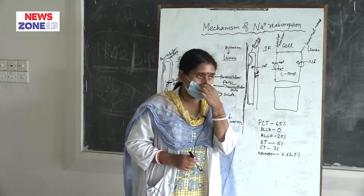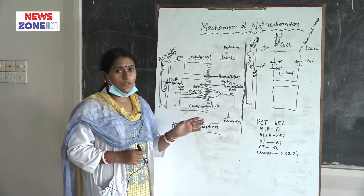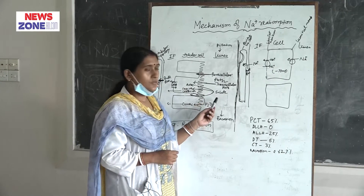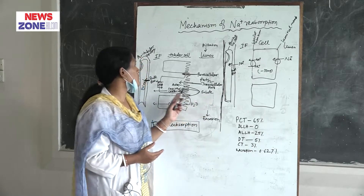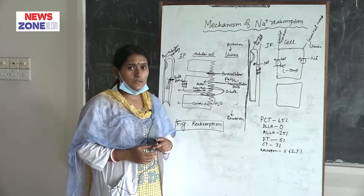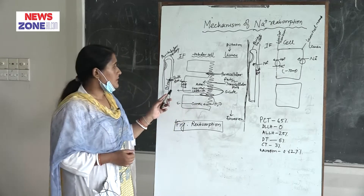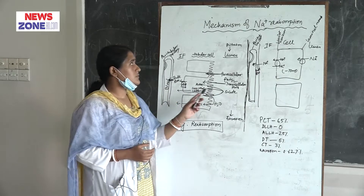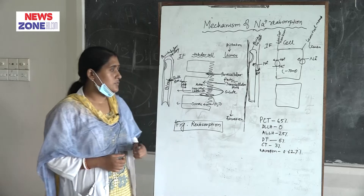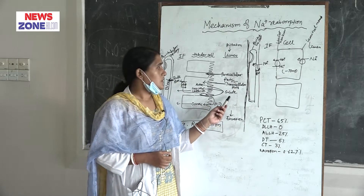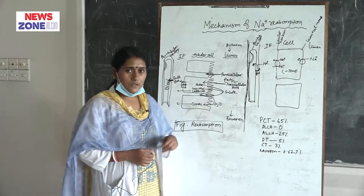Mechanism of sodium reabsorption: reabsorption means transport from the lumen into the blood. Secretion means solute and fluid — solvent is transported from the blood into the lumen. The main topic is sodium reabsorption, meaning solute and solvent, that is water, are reabsorbed — transported from the lumen into the blood.